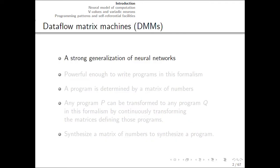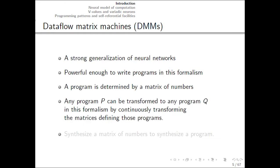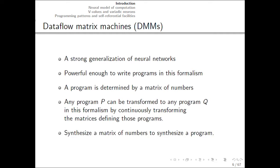Dataflow matrix machines generalize neural networks. And this generalization is sufficiently powerful that you can write programs in the resulting formalism. But a program is still determined as a matrix of numbers, just like for neural nets. Any program can be transformed into any other program by continuously transforming the appropriate matrix. To synthesize a program, it's enough to synthesize the matrix of the appropriate connectivity weights.